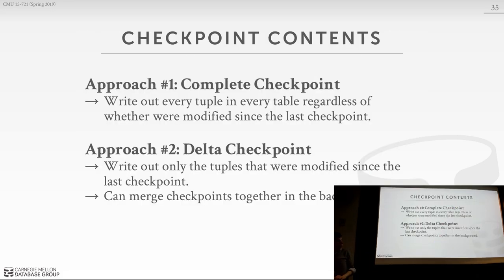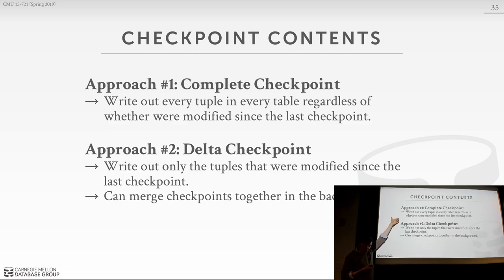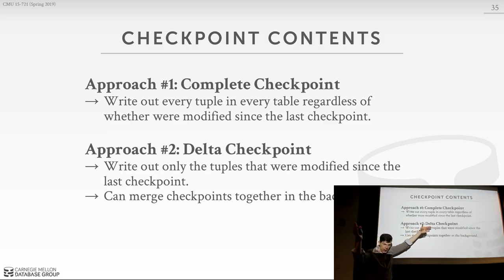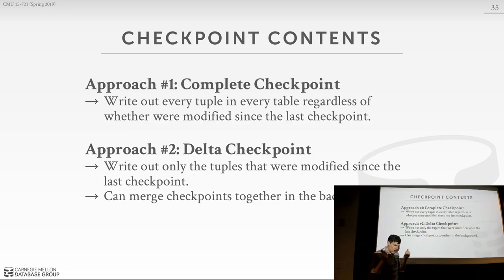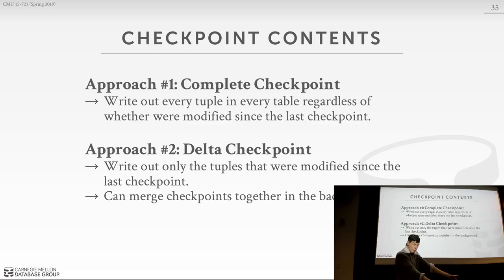Now let's talk about what kind of checkpoints to take. The two choices are a complete checkpoint or a delta checkpoint. A complete checkpoint is literally the entire database as it exists in memory written to disk. If my database is 100 gigabytes, I take a checkpoint and I get a 100-gigabyte file — you can compress it, but the idea is writing everything.